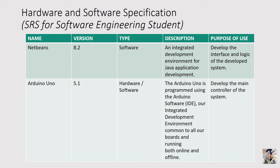If it's an IoT project, you have to explain all the hardware involved: the wiring, the microcontroller, and everything. If it's software, you describe the software used for development of the interface, the logic, and the database. It is far easier to use a table. You put the name — for example, NetBeans — the version, which is 8.2, and then the type.